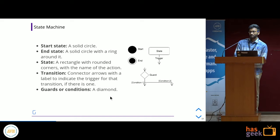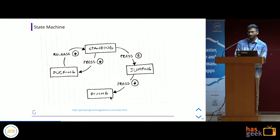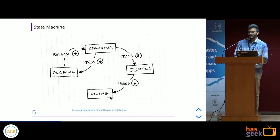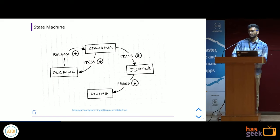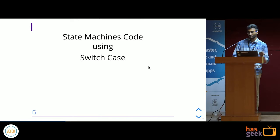These might be familiar UML diagrams — start state, end state, a transition from one state to another. An important feature in practical applications is the usage of guards or conditions, because most practical applications require conditional state transitions. Coming back to the previous problem, we can rewrite the entire if-statements code by jotting down on paper all the states the player could be in: standing, jumping, diving, and ducking, with limited transitions between them. We can model this using switch case statements in JavaScript.